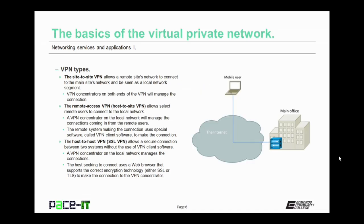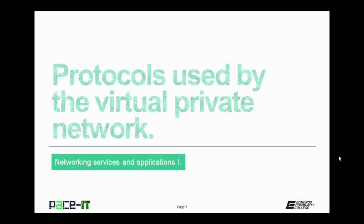The remote system making the connection uses special software called VPN client software to make that connection. The third type of VPN is the host-to-site VPN, which is often called an SSL VPN. It allows a secure connection between two systems without the use of VPN client software. A VPN concentrator on the local network manages the connection. The host seeking to connect uses a web browser that supports the correct encryption technology, which is either SSL or more likely TLS, to make the connection to the VPN concentrator.